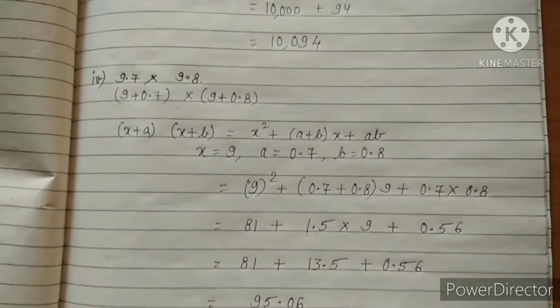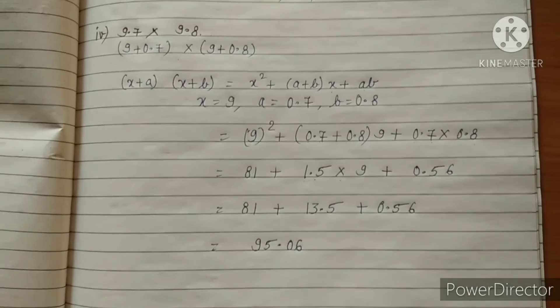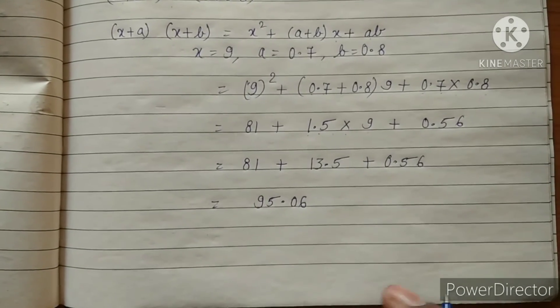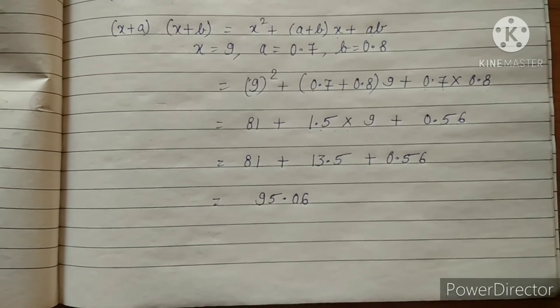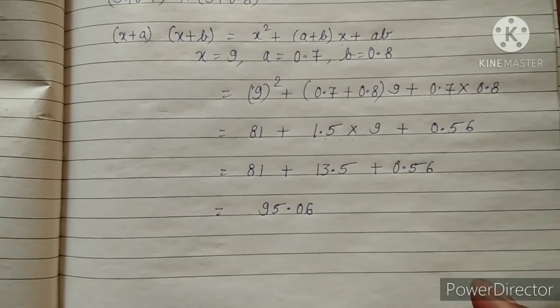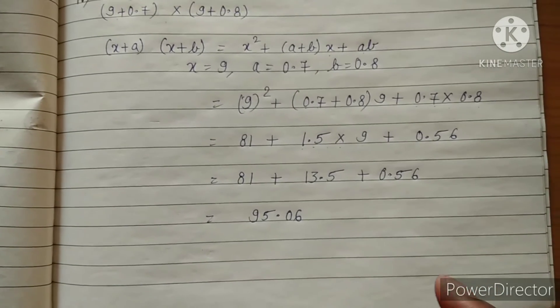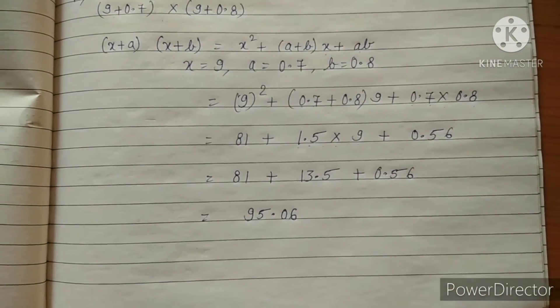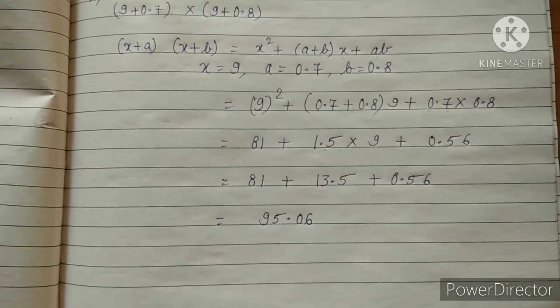Here we completed exercise 9.5 of chapter 9, Algebraic Expressions and Identities. I hope you understood, and if you have any doubt, you may ask.